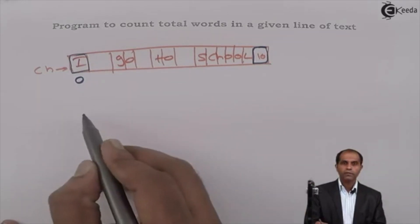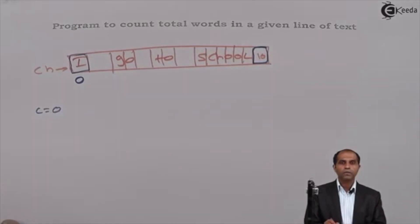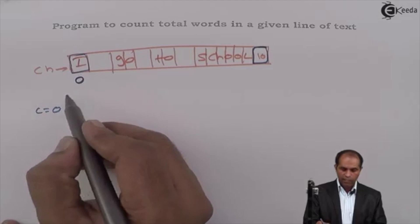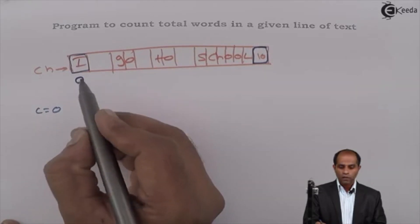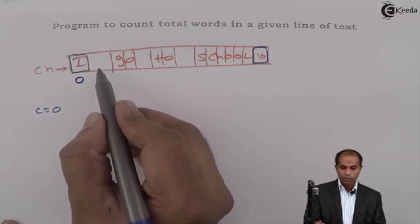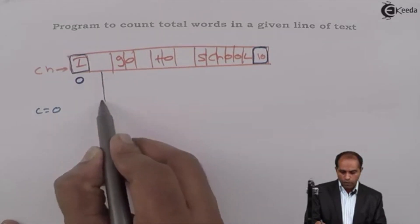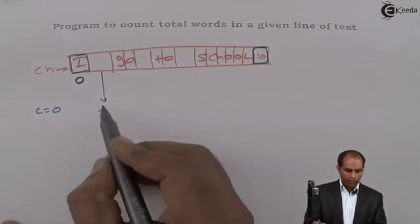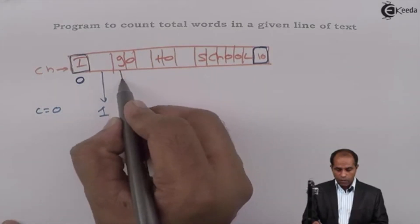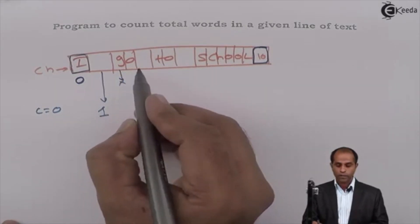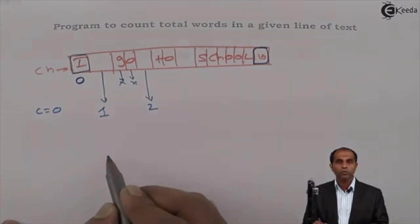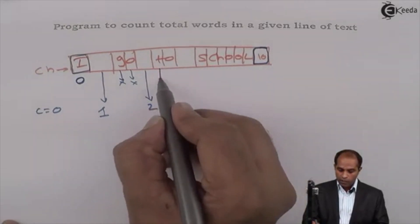So what I'll do? When I'm visiting every element, I'll take a counter as C equals to zero and check is this character blank space. If it says yes, then I'll proceed further. If it says no, then I'll proceed further. Is this a blank space? Yes, this is a blank space. If this is a blank space, you change the counter as one. So automatically the counter is initialized to one. So, G, is this a blank space? No, don't do any operation. Is this a blank space? No, don't do any operation. Is this a blank space? Yes, two.